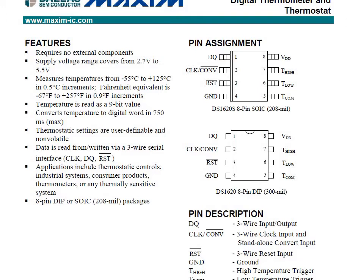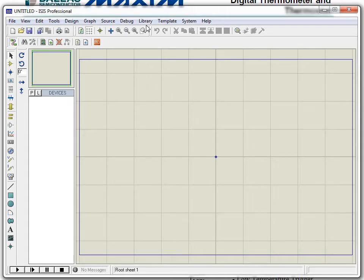The component we need to create is a chipset — the DS1620 — which is an 8-pin SOIC device. We may not find this device in the ISIS Professional editor, so let's begin by making a component in the schematic editor. Let's open the ISIS Professional schematic editor tool.